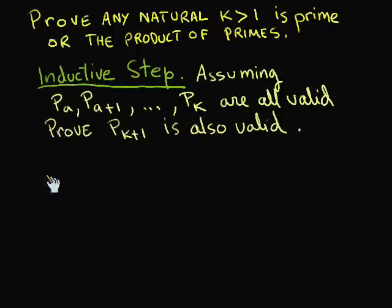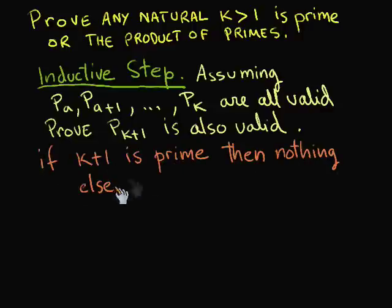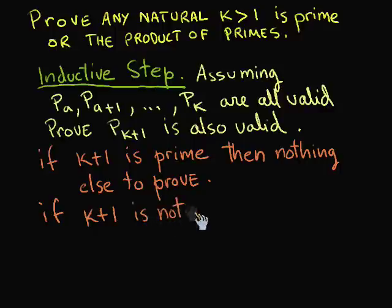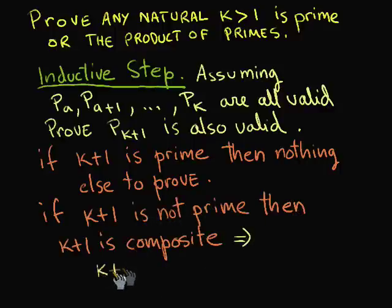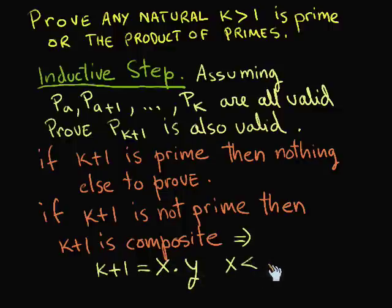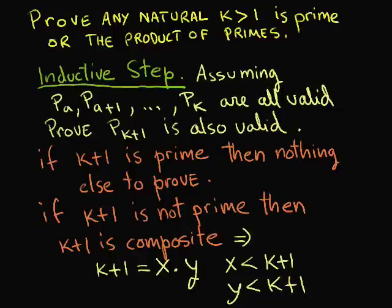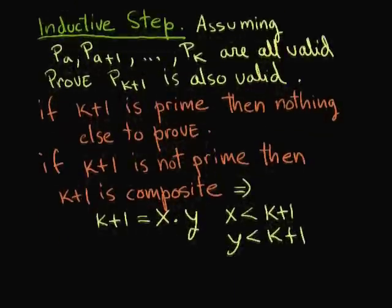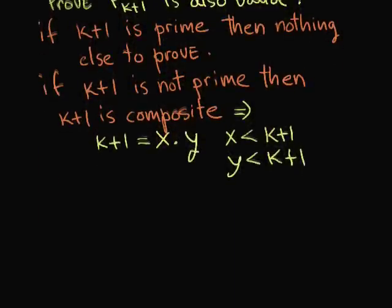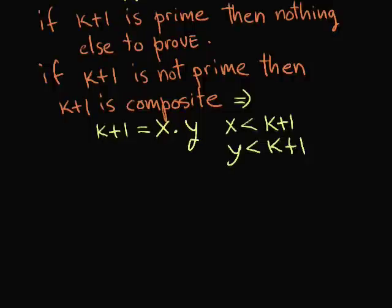If k plus 1 is prime, then there is nothing else to prove, so p sub k plus 1 is true. Now let us handle the case where k plus 1 is not prime. Then k plus 1 is composite, which means it can be represented as a product of two integers. Let them be x and y, such that k plus 1 equals x times y. But x is less than k plus 1, and y is less than k plus 1.